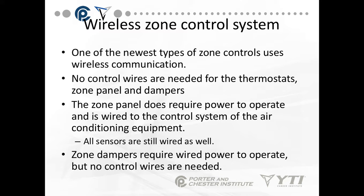One of the newest types of zone controls uses wireless communications. No control wires are needed for the thermostats, zone panels, and dampers. The zone panel does not require power to operate and is wired to the control system of the air conditioning equipment. All the sensors are still wired, and the zone system dampers require wire power to operate, but no control wires are needed.